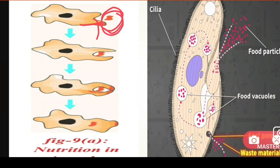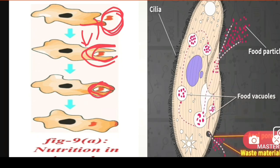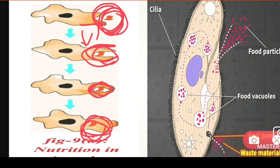The food is entering into the amoeba. In the second step it opens around the food, in the third step it closes around it as the food enters, and in the fourth step the amoeba eats the food. The amoeba takes the food inside its body by opening its outer layer and intaking the food. This is how nutrition takes place in amoeba.